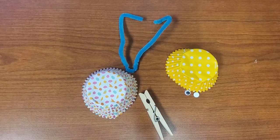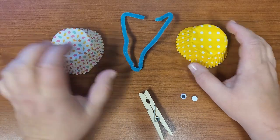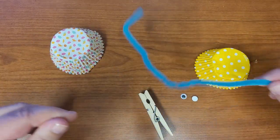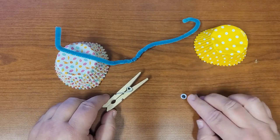Okay, so when you open your take and make bag you will find that you have two cupcake liners, a pipe cleaner, a clothespin, and two googly eyes.